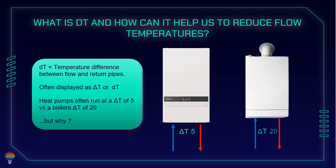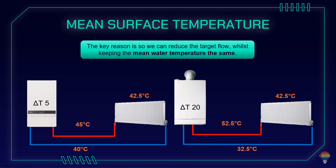In heat pump systems, delta T of 5 degrees is the most efficient. If we compare what we achieve with this lower delta T — for example, we want a mean water temperature of 42.5 degrees — to achieve this with a gas condensing boiler, we need to go with 52.5 degrees flow and our return will be 32.5 degrees Celsius, giving a mean water temperature of 42.5. With delta T 5 on a heat pump system, we need to go with 45 degrees flow to achieve the same 42.5 degrees mean water temperature, and our return will be 40 degrees.